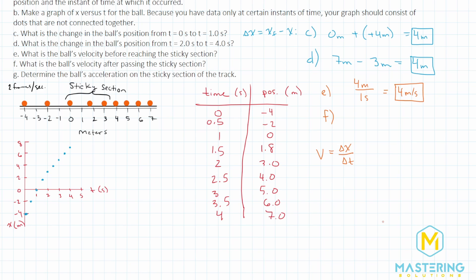For part F, they want us to find the ball's velocity after passing the sticky section. The sticky section ends at three meters, which corresponds to two seconds; the end at seven meters corresponds to four seconds. From two to four seconds, the distance traveled was four meters again. But the time is now two seconds, so four divided by two seconds gives us two meters per second. After the sticky section, it had slowed the ball's velocity in half.